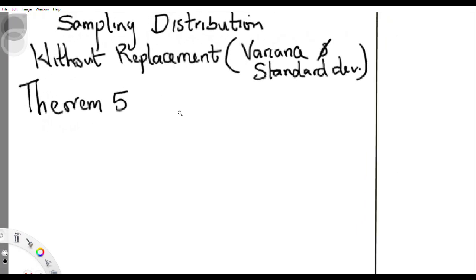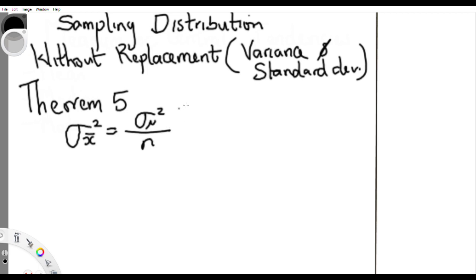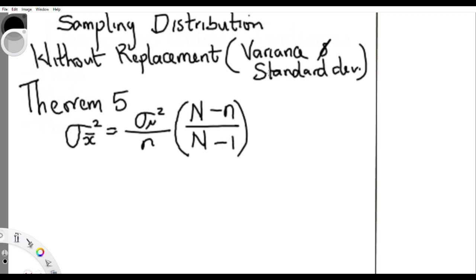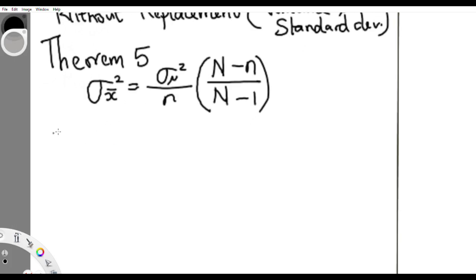Theorem 5: getting the variance for the sample without replacement. It is the same as the variance of the population divided by the sample size, but the only difference is the introduction of a correction factor, which is: population size minus sample size, all over population size minus one. That is the difference between with-replacement and without-replacement for variance.